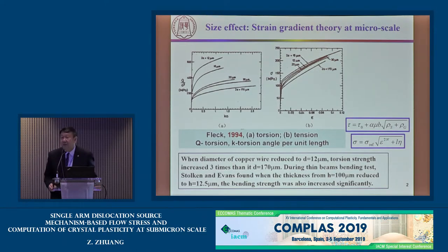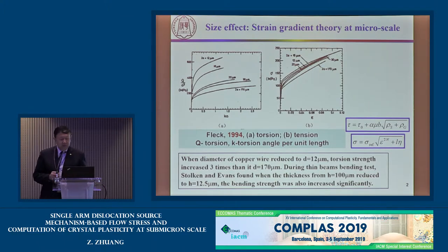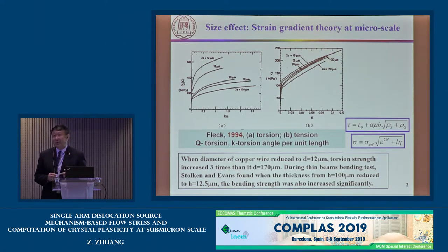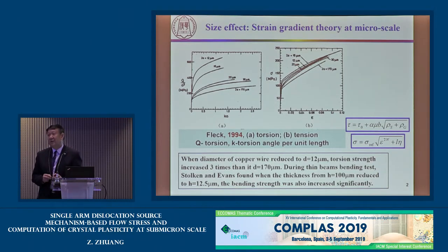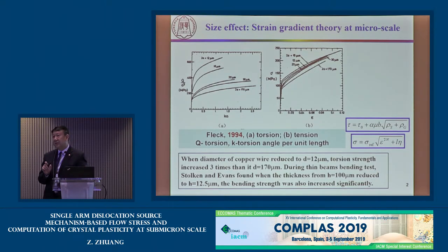It's a story from 1994. There are two copper wires with diameters ranging from 12 microns to 170 microns. The strength shows a size effect — the smaller is stronger. But under pure tension, there is no size effect. This size effect appears in the micro scale, from 10 microns to 1 millimeter.